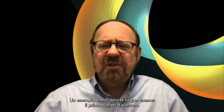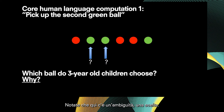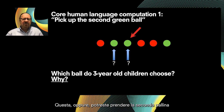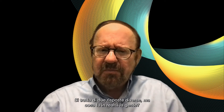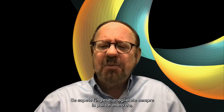Let's begin with something simple — an example illustrating human language's first core computation. I've shown it as a row of six red and green balls. Imagine someone asking: 'Pick up the second green ball.' There's an ambiguity here: you could pick up the second of all the green balls, that's ball number three, or you can pick up the second ball and see that it also happens to be green, ball number two. But if you know English, you always select ball number three.